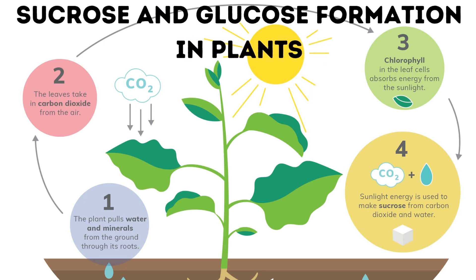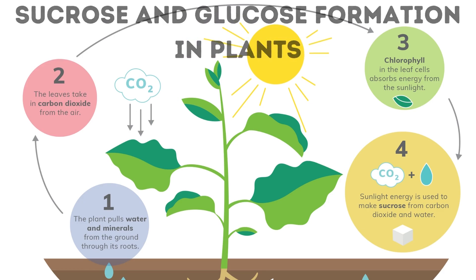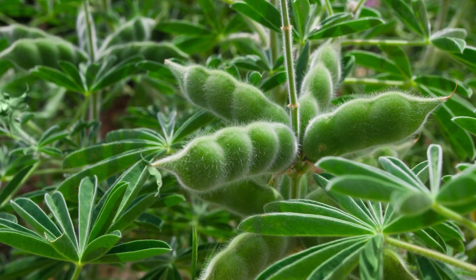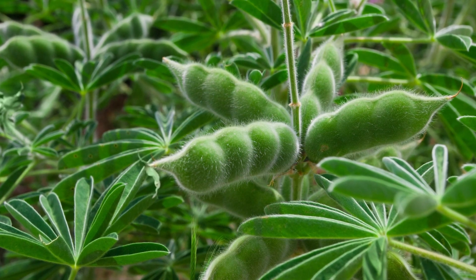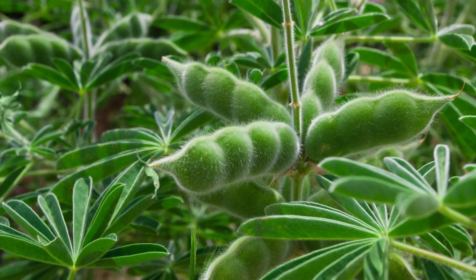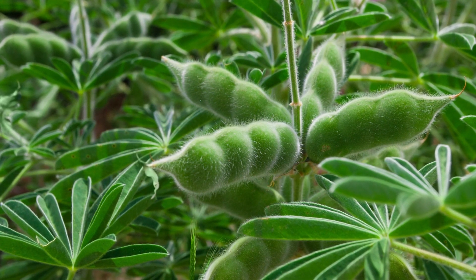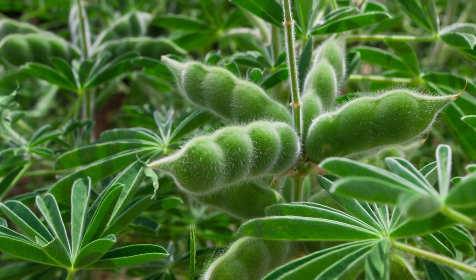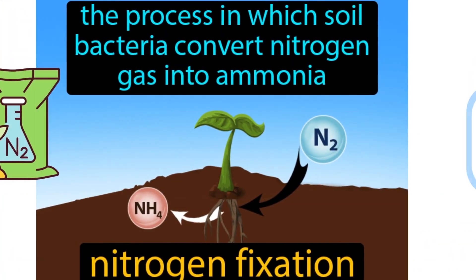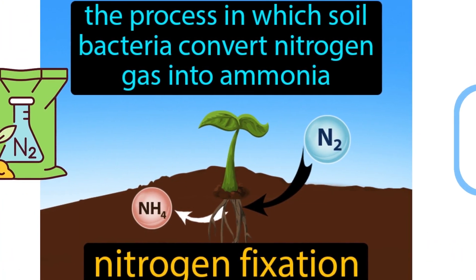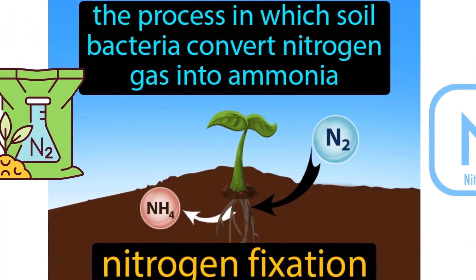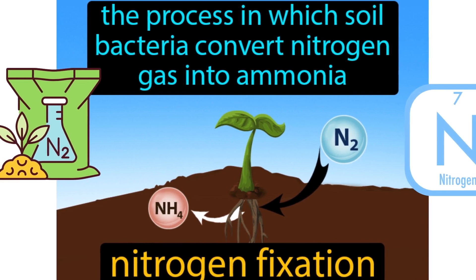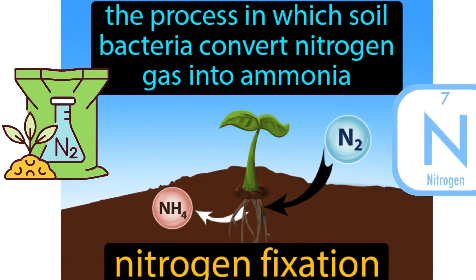Plants from the legume family can use atmospheric nitrogen. They work with helpful bacteria that help them absorb it by converting it into ammonia and ammonium. This process is called nitrogen fixation.